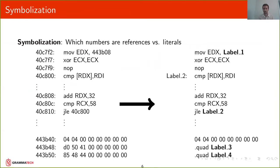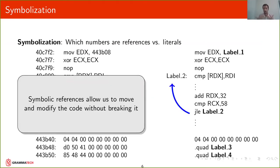The second problem that we tackle is symbolization. For each number in the binary, some of these numbers are going to be referring to addresses of other parts of the binary, whereas others are going to be just literals that have to remain unchanged. For references we want to create labels